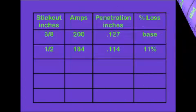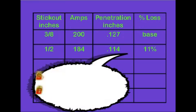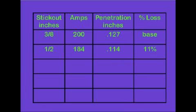Keeping the wire feed speed the same and increasing the stick out from 3/8 to 1/2 inch, and using the melting rate equation, we find the amperage reduces to 184 amps. This reduces penetration to 0.114 inches, or 11%.